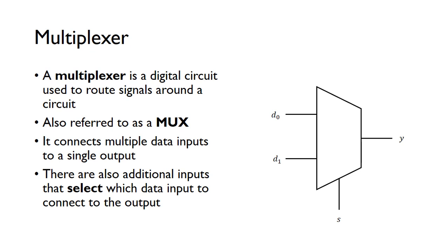We need to have a separate input which selects which data input to connect to the output. It's a bit like what you see on a railway track. We've got two inputs, and the select input will select which input to connect to the output—we can have it connected like this or like this, depending on the state of the select bit.